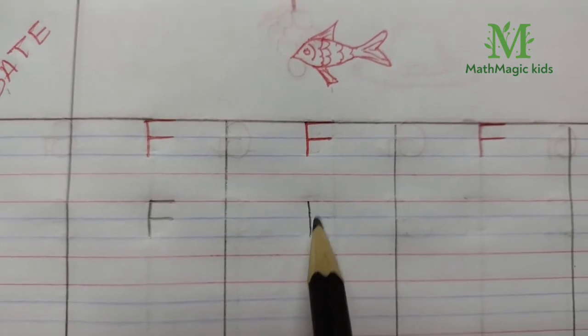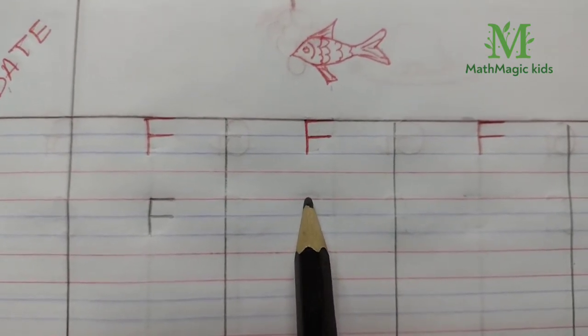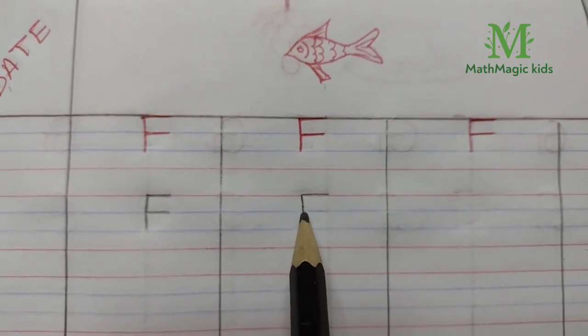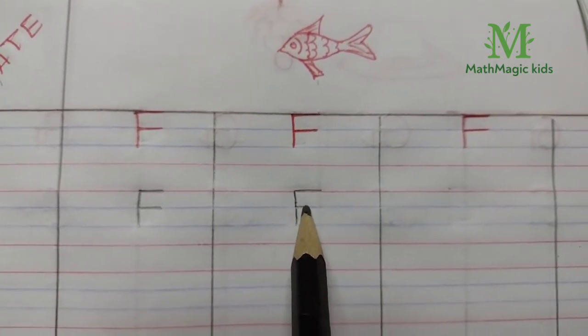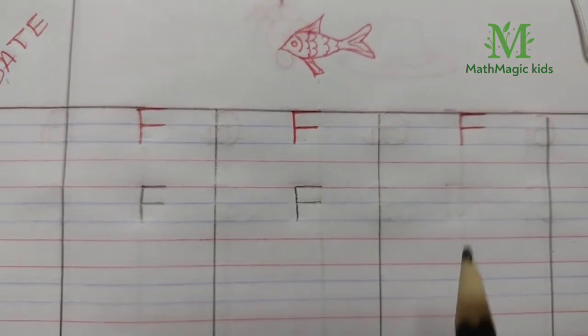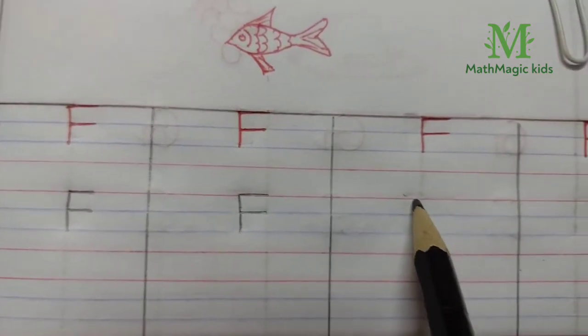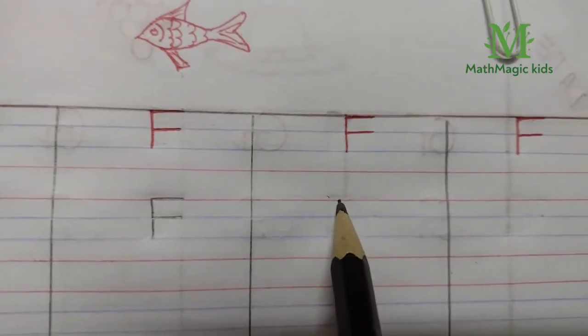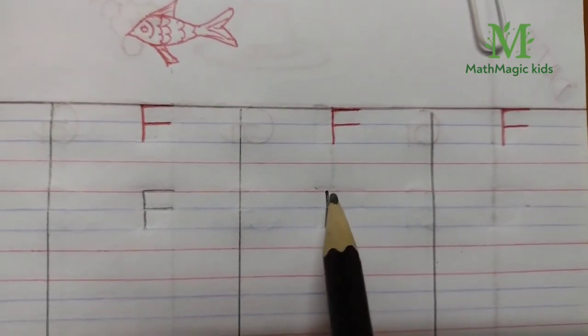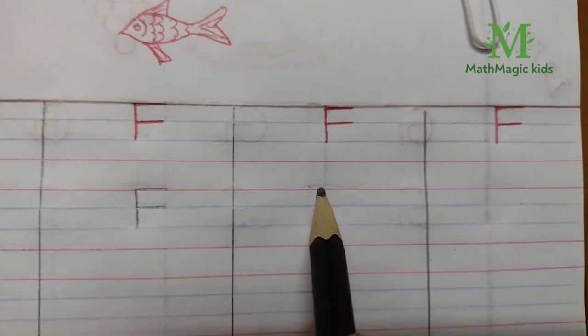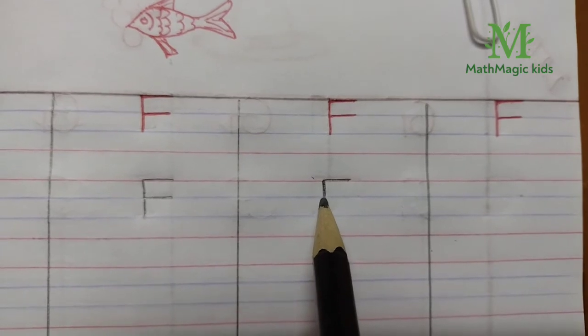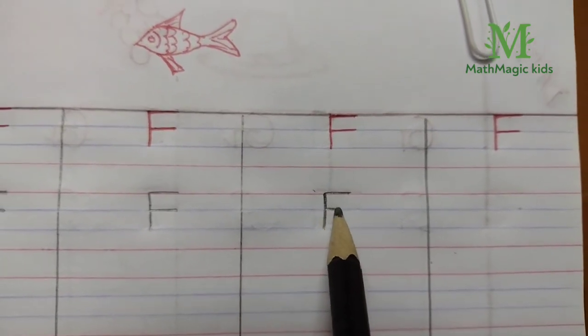Let us write again. First we draw a standing line from first red line till second blue line, then a small sleeping line on first red line like this. Another sleeping line on first blue line. This is how we write F.